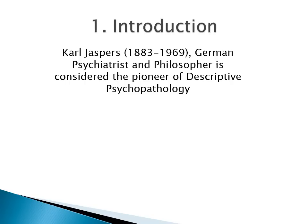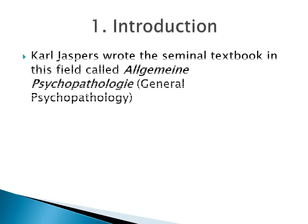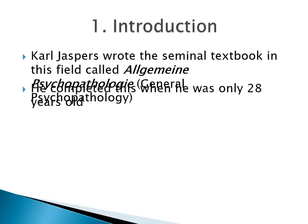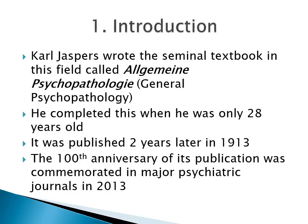Karl Jaspers, a German psychiatrist and philosopher, is considered generally as the pioneer of descriptive psychopathology. He authored the most important textbook in this topic. Remarkably, he completed this when he was only 28 years old. The 100th anniversary of its publication was commemorated in major psychiatry journals in 2013, highlighting how important this textbook is.